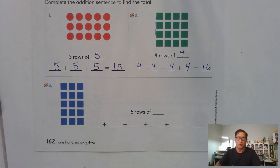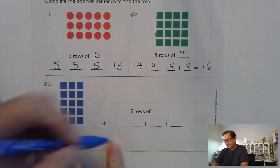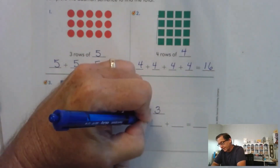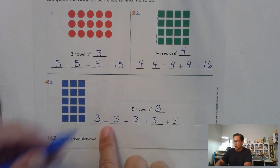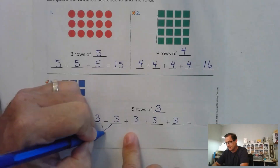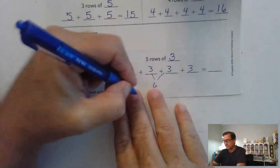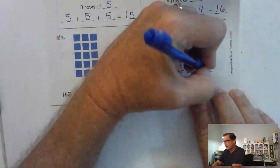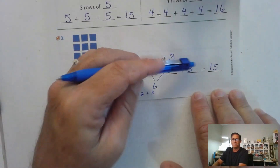What is this one showing us? Five rows of — well, it looks like there are three in each row. Yes, five rows of three. So three plus three plus three plus three plus three. We know that three and three is six, and three and three is six. If you double sixes, that's 12, plus the last three: 15. Three, six, nine, twelve, fifteen.